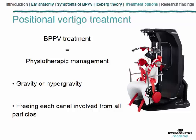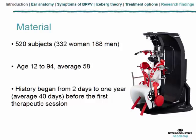We made a study about three years ago concerning about 520 subjects. This study included patients that presented some dizziness without any positional vertigo. The average age was 58 and the average history duration was 40 days.